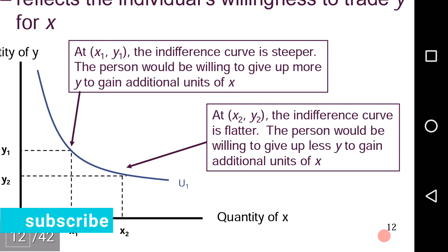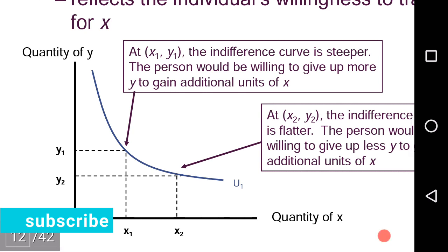As we move downwards along this indifference curve and reach the point x2, y2, the indifference curve is flatter. The person would be willing to give up less y to gain an additional unit of x. Why is this? Because at point x1, y1, the consumer is more willing to attain x and is ready to give up more of y for this additional x. But as he reaches x2, y2, there is already too much quantity of x with him, so he doesn't want to give up much of y for additional x.